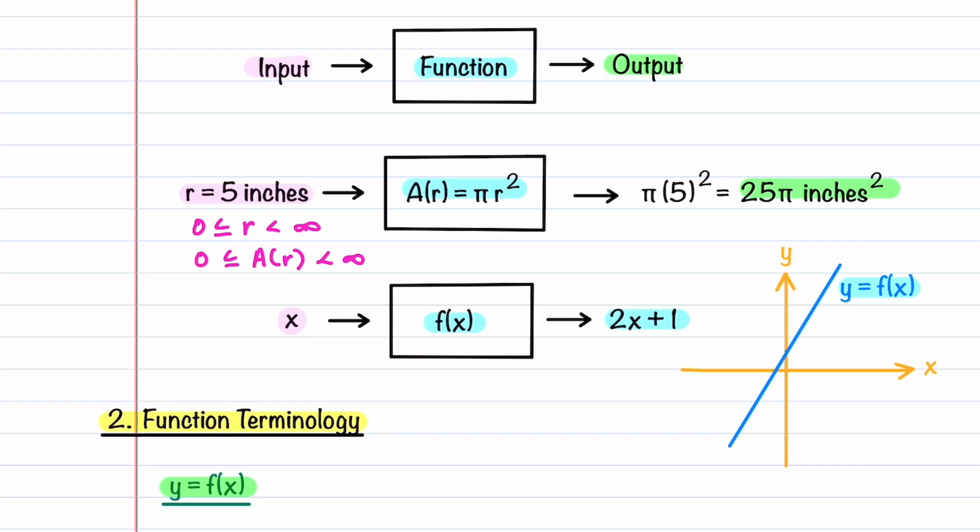For our function 2x plus 1, x can range anywhere from minus infinity to infinity, so the domain runs between minus infinity and infinity, and then the range is represented by our value y, and you can see that it also runs between minus infinity and infinity.